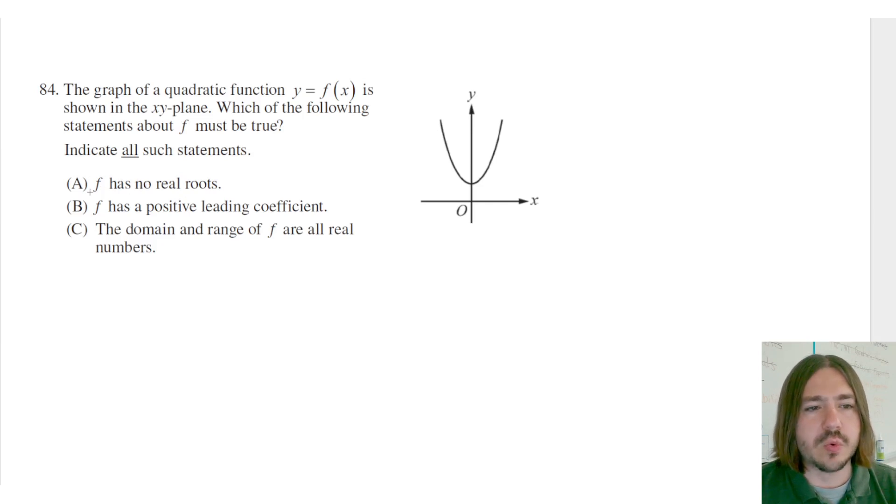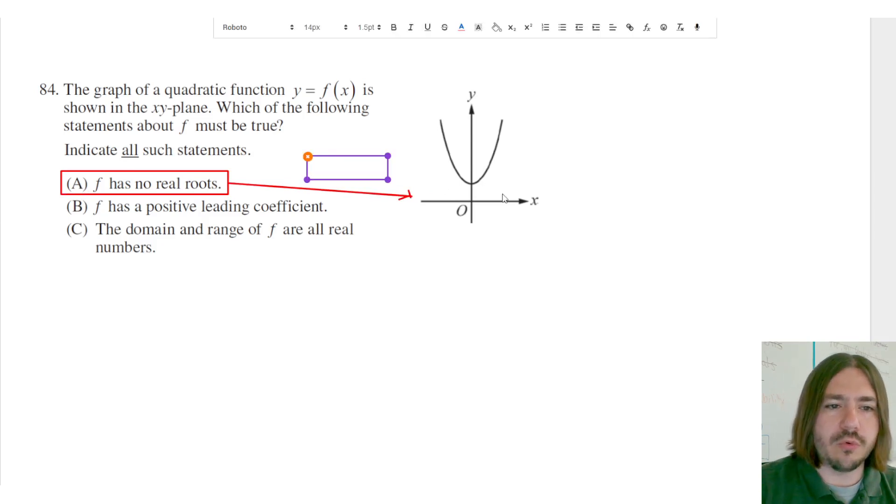So A says F has no real roots, and we know that has to be true because there are no X-intercepts here. If there's no X-intercepts, meaning the graph does not cross or touch the X-axis, then we know that there can be no real roots.